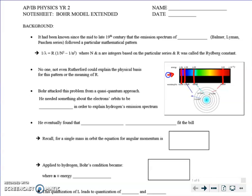We want to explain this as physicists, and this has been known since the 19th century. Certain physicists — a guy named Balmer, Lyman, Paschen — you may remember those names from chemistry. The spectral lines followed a specific pattern, and this was for hydrogen only.